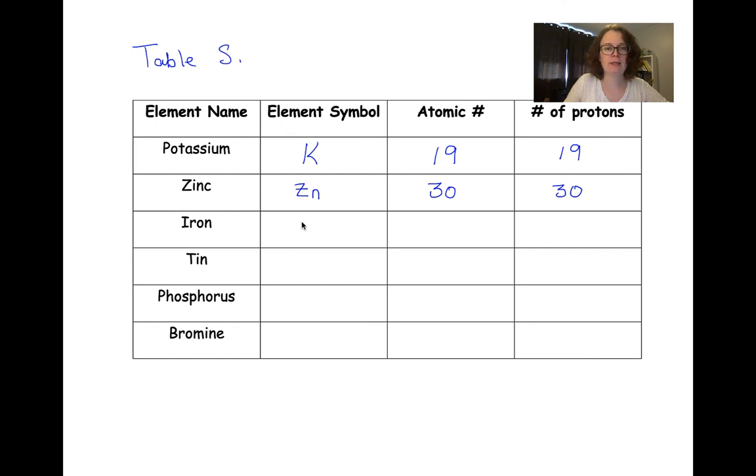Iron has an element symbol of Fe. Again, this is one that's a little bit strange. The atomic number for iron is 26, which means that its number of protons is also 26.